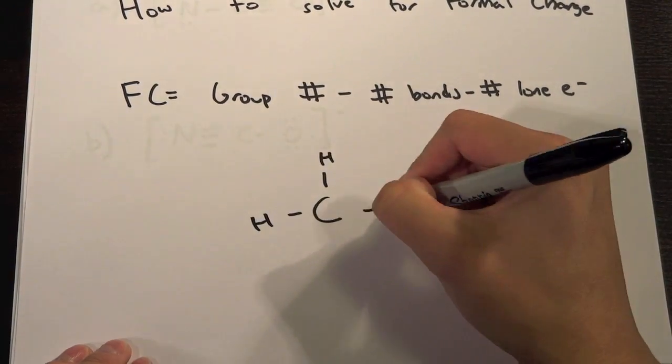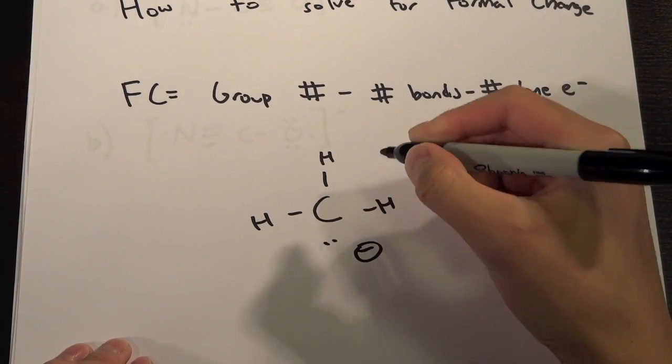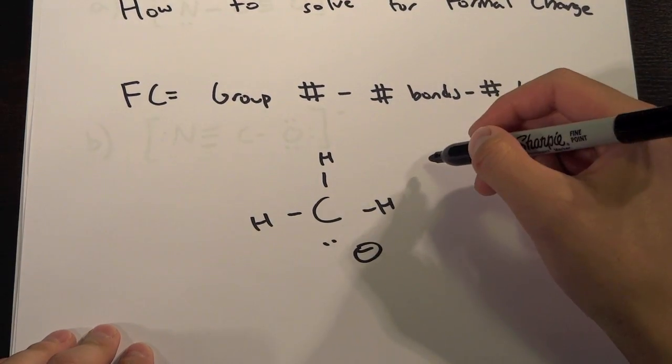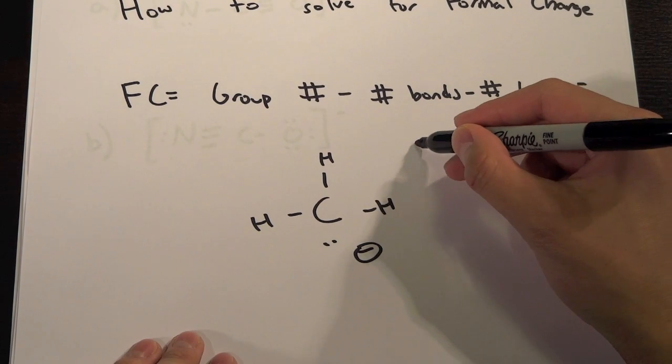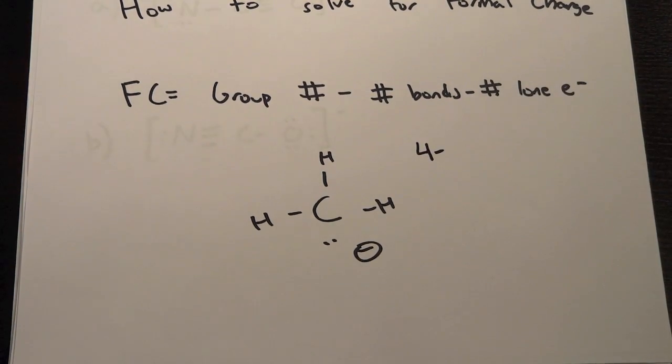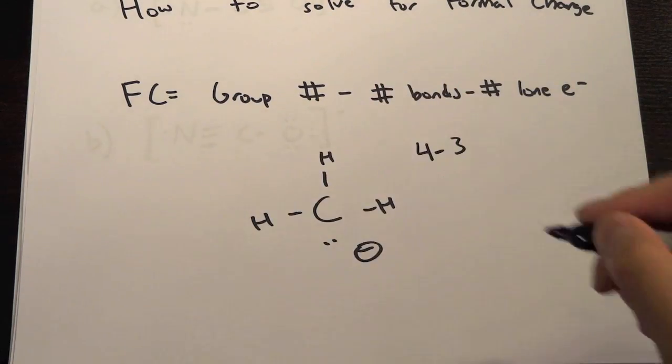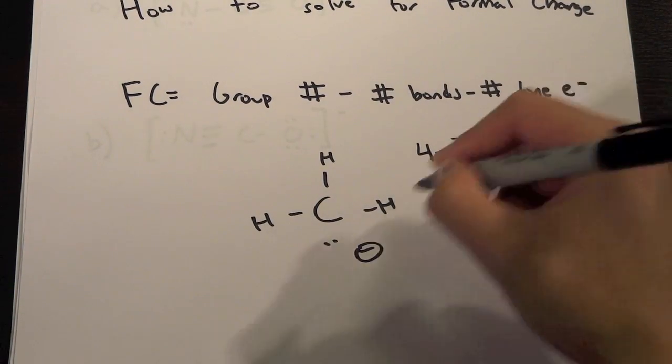So let's just say we have this imaginary molecule right here we want to find the formal charge of C. So C is in group number four, four minus, and then the number of bonds so it has three bonds right, one, two, three, and it has two electrons, two lone electrons.